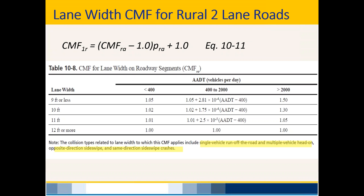So to properly calculate CMF1R, you must not only use the CMF_RA value from the table, but also review historical crash data to determine what percentage of total crashes are single-vehicle run-off-the-road, head-on, opposite-direction sideswipe, or same-direction sideswipe. For example: if you have 100 crashes total and these four crash types account for 62, then P_RA is 62/100 = 0.62. It's not hard to calculate, but it's very important to remember.